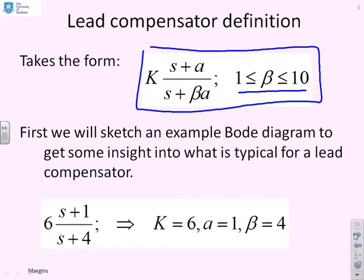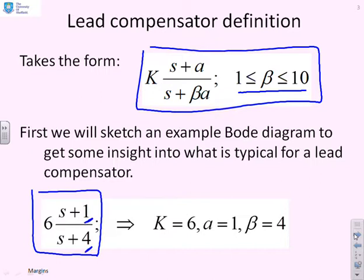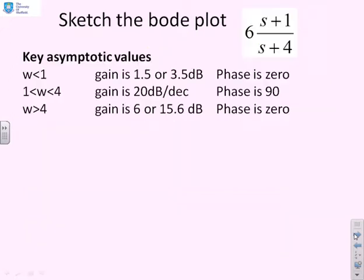Here's a typical example: 6 times (S plus 1) over (S plus 4). You can see clearly the zero is at 1, the pole is at 4, or minus 1 and minus 4, and so the pole has a larger magnitude than the zero. In this particular case we've got K equals 6, A equals 1, and beta equals 4. So what we'll do next is sketch the Bode diagram for this compensator.